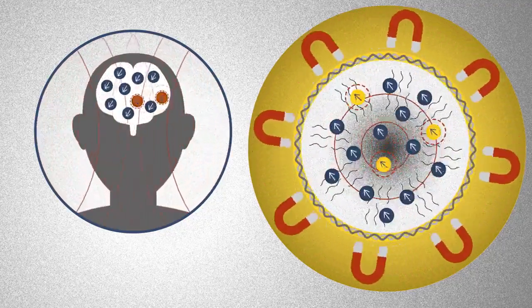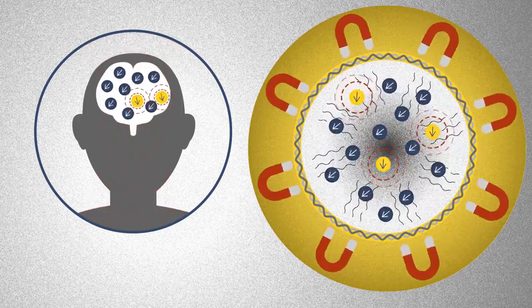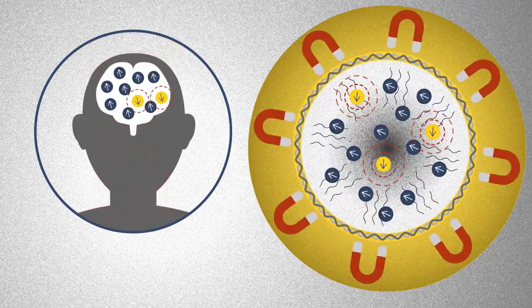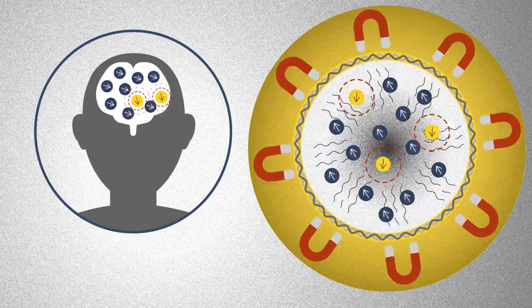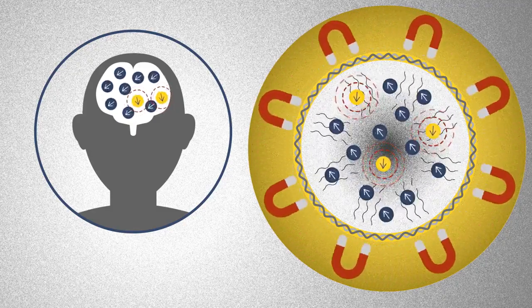When the machine stops emitting radio waves, the water molecules that had just moved along the magnetic field release the energy they had absorbed and go back to their position.